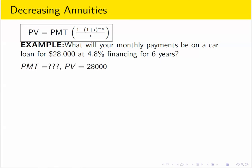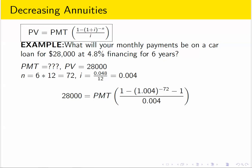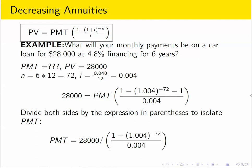What will the monthly payments be? We don't know PMT, but we do know the present value is $28,000. We know 72 monthly payments will be made at a periodic interest rate of 4.8% divided by 12. Plug everything into the formula, and we see that PMT can be isolated by dividing both sides by the quantity in parentheses. Plug all that into a calculator and we end up with a monthly car payment of $448.35.